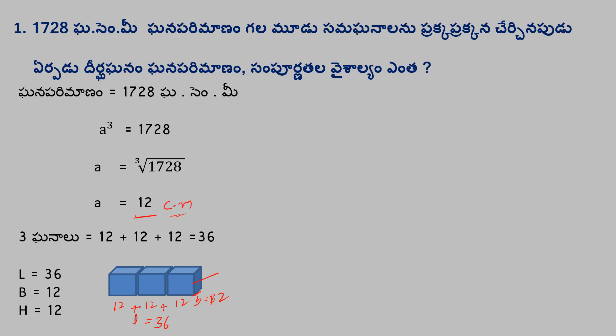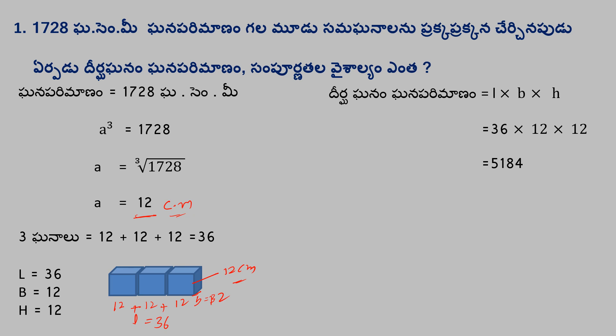Height A takes the value of 12 cm. Now I call the values L, B, H. Substituting into the volume formula: gana = 36 × 12 × 12 = 5184 cubic centimeters.